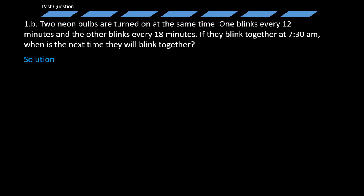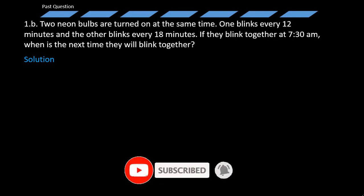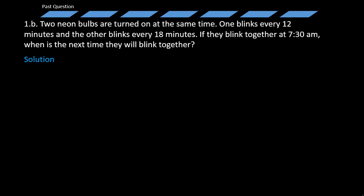If you look at this question critically, it involves the application of the least common multiple. How do I know? Two neon bulbs turn on at the same time — one blinks every 12 minutes and the other blinks every 18 minutes. If they blink together at 7:30 a.m., what is the next time they will blink together? The next time they will blink together would only be a time after they started.